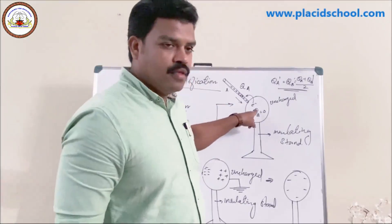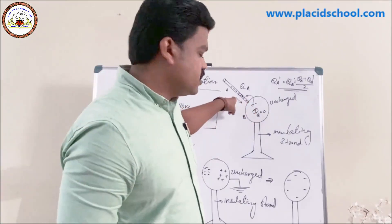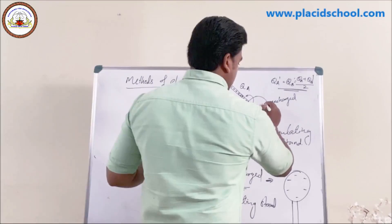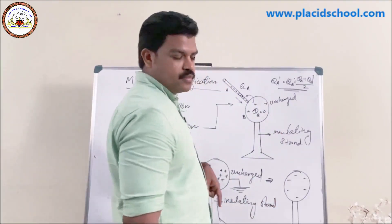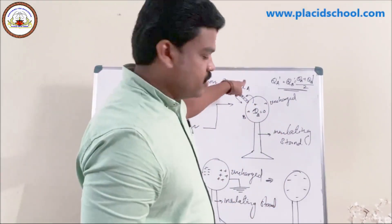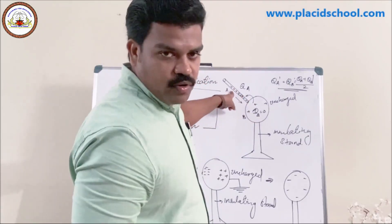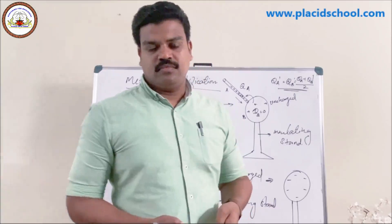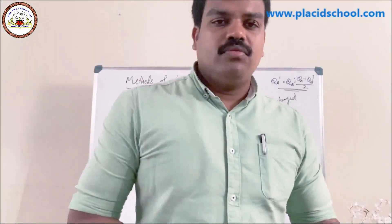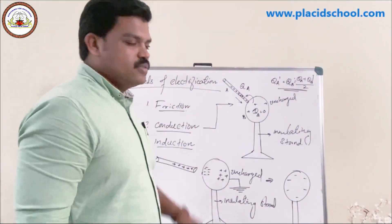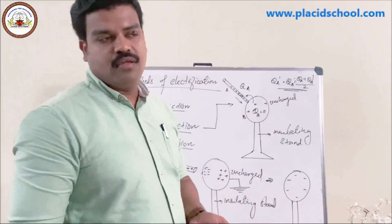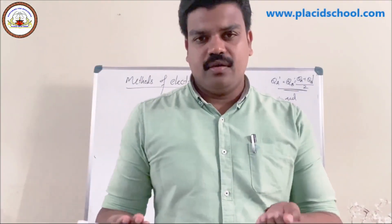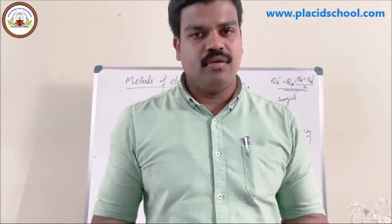In the case of conduction, if the rod is positively charged, the uncharged body will also become positively charged after conduction, because electrons are transferred from the uncharged body to the positively charged body to attain equilibrium. Now we have discussed all three methods: charging by friction, charging by conduction, and charging by induction.